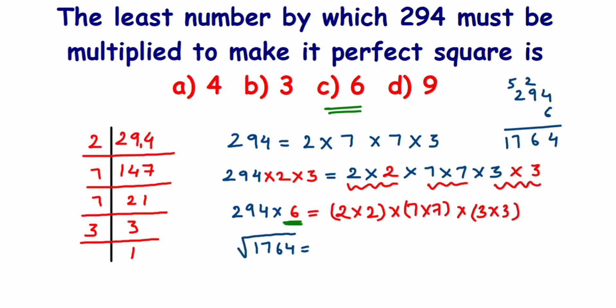If I want to find the square root of it, simply take one factor from each pair: 2 into 7 into 3. 2 times 3 is 6, 6 times 7 is 42. So square root of 1764 will be 42.